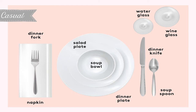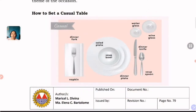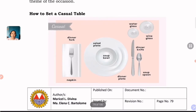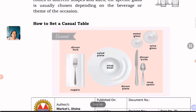The soup bowl is on top because soup is usually served first, then sometimes an appetizer in the form of a salad — hence the salad plate — and then the main course. At least during occasions at home, like birthdays or anniversaries, we can level up our dining experience by setting up a casual table setting.